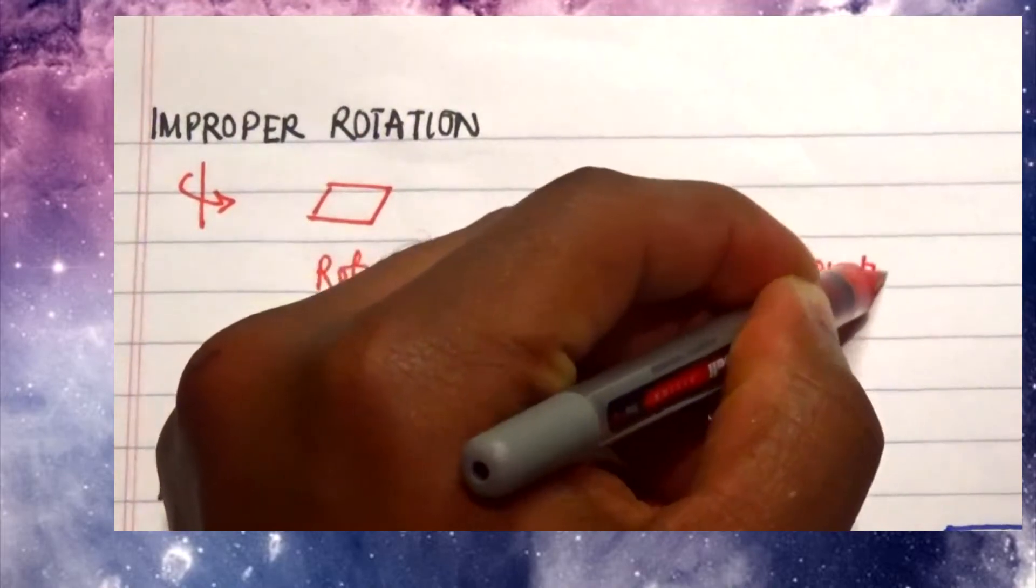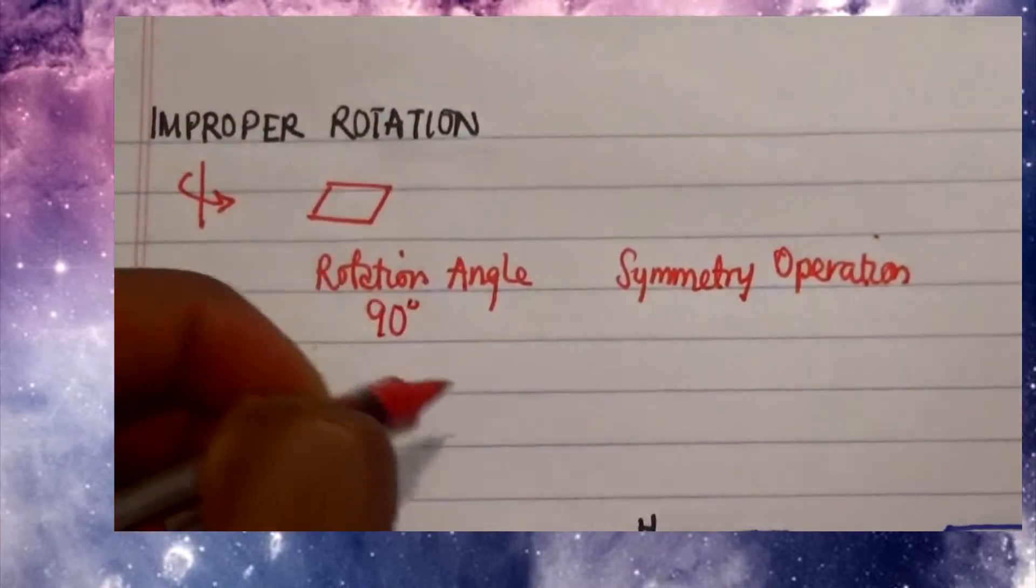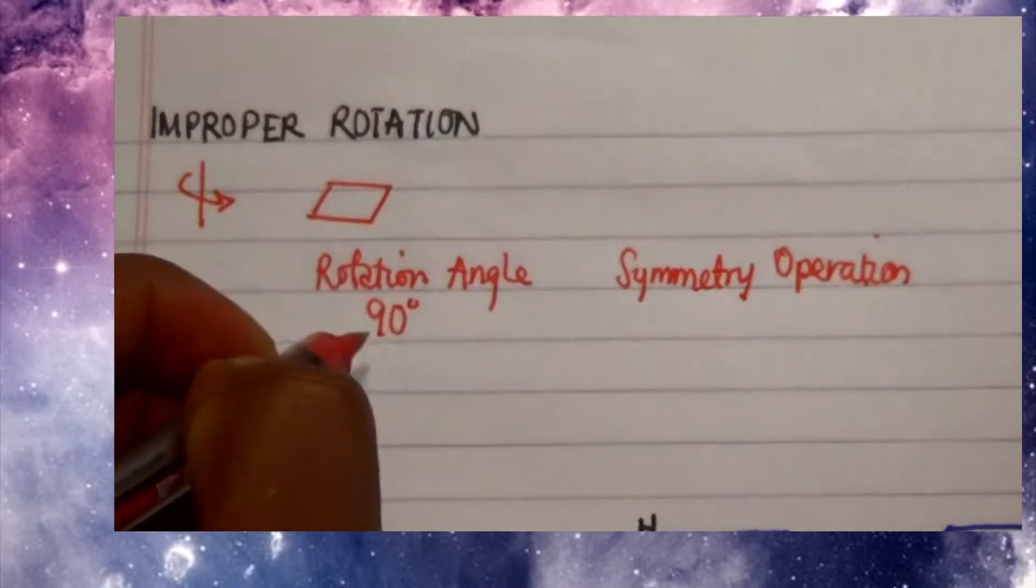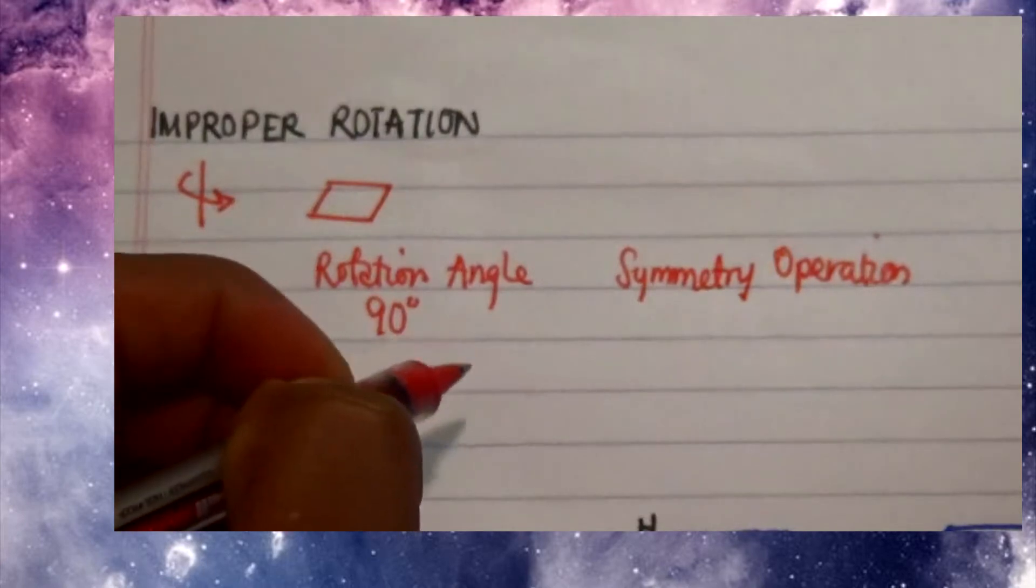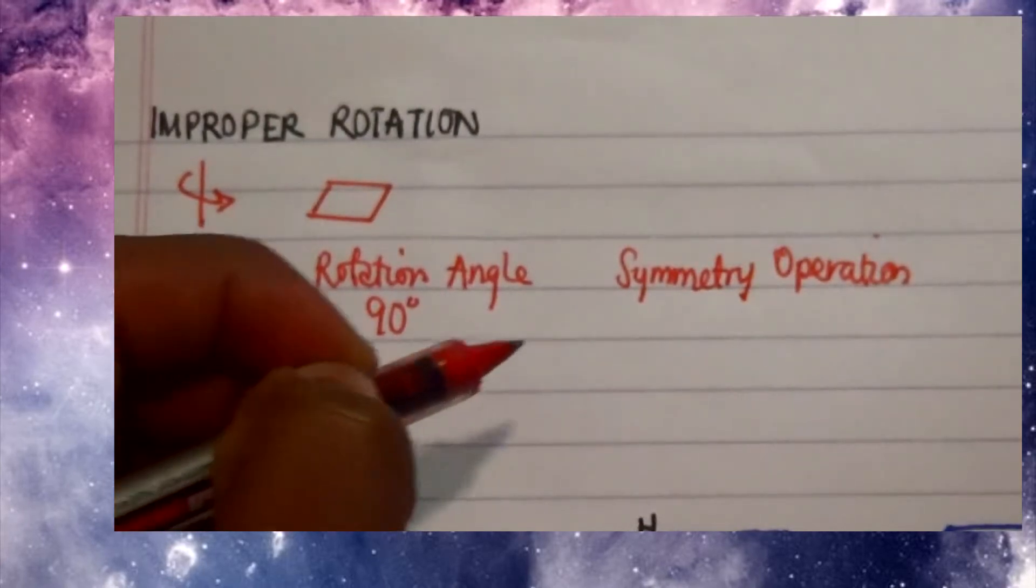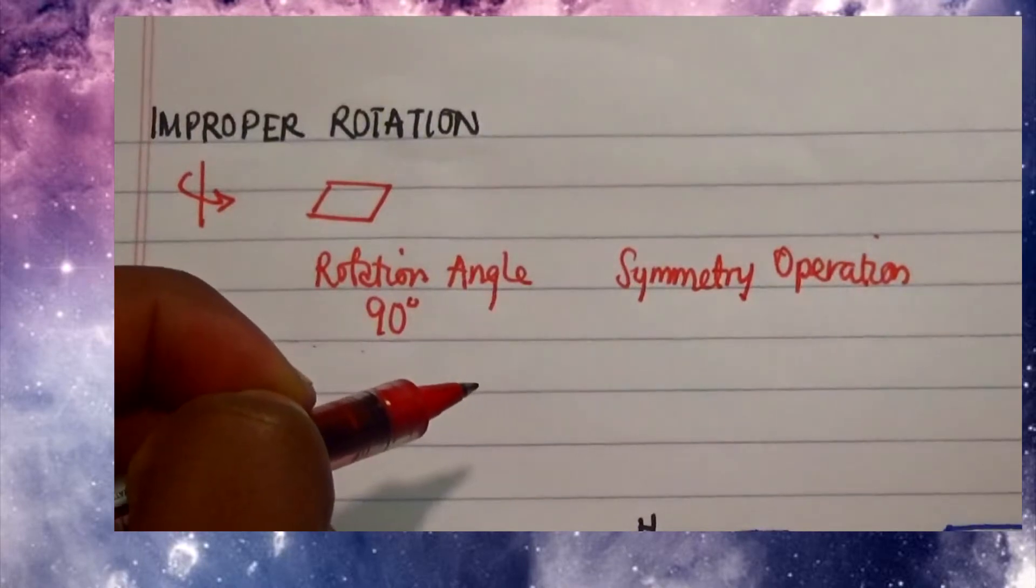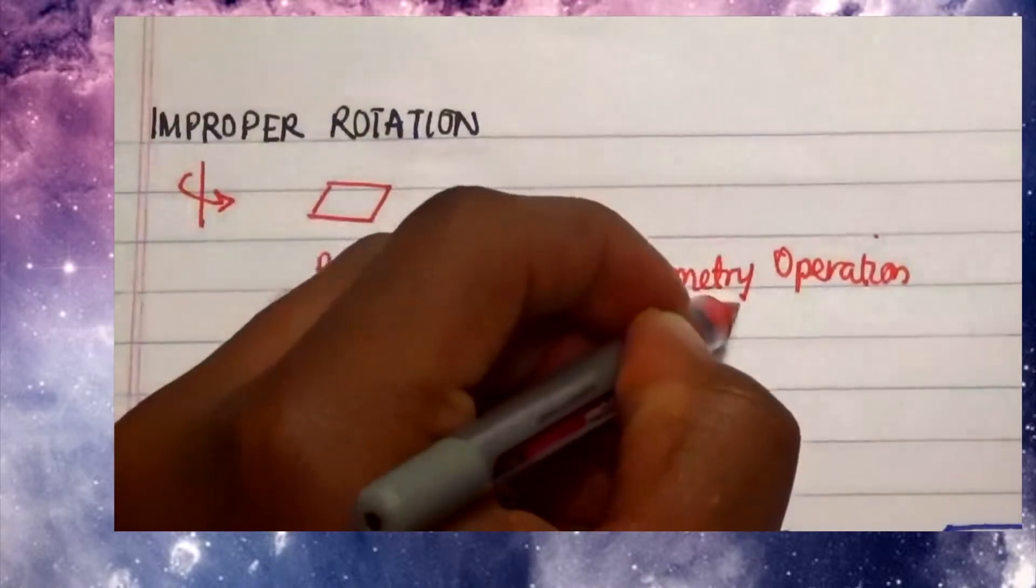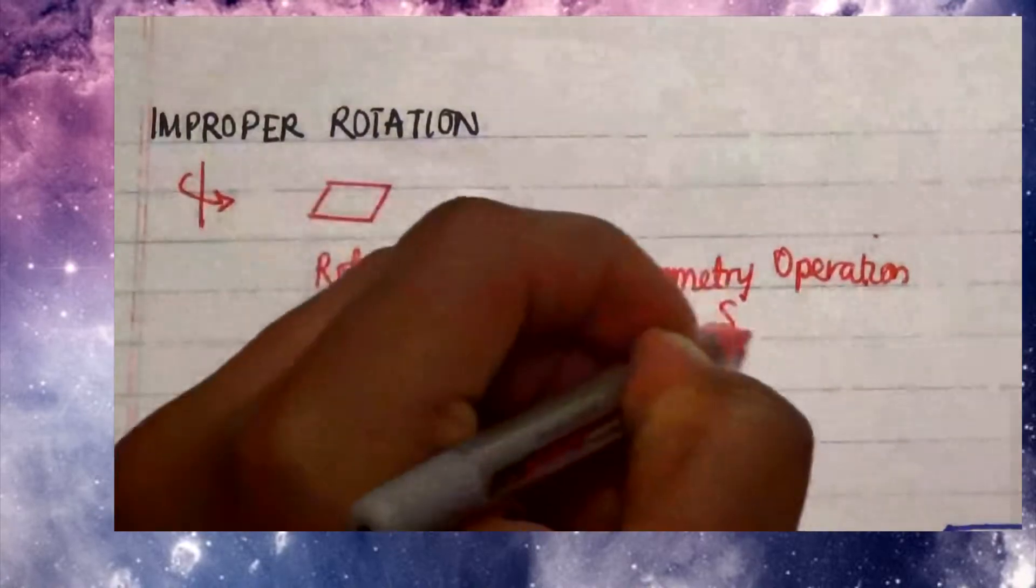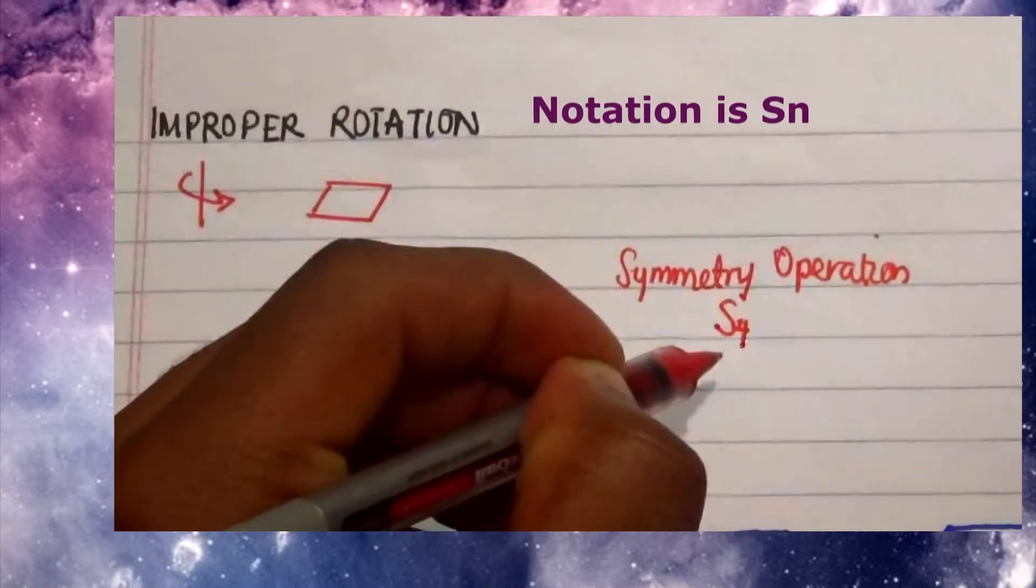Now first we're going to look at what we know as 90 degree rotation. Usually a rotation angle that is 90 degrees will give us a C4, and then if you perform a reflection, then what we have is the addition of two operations which results in the symbol S4, going from C4 to S4.